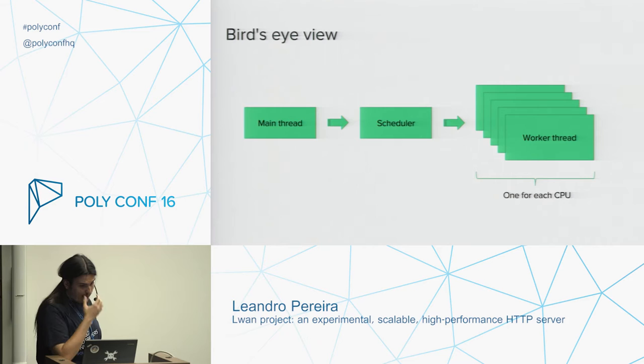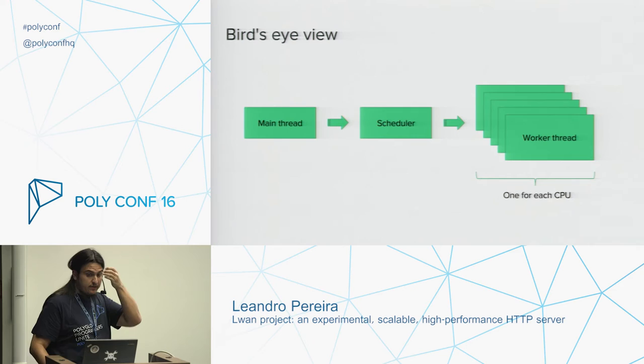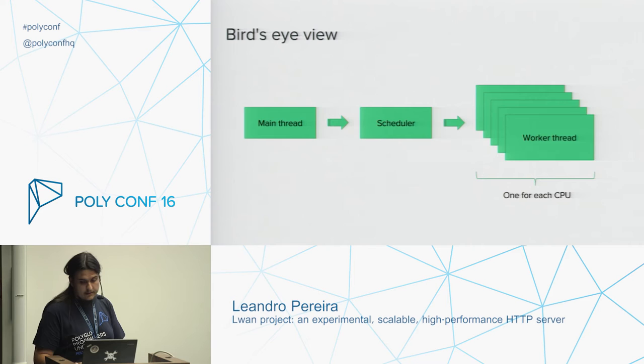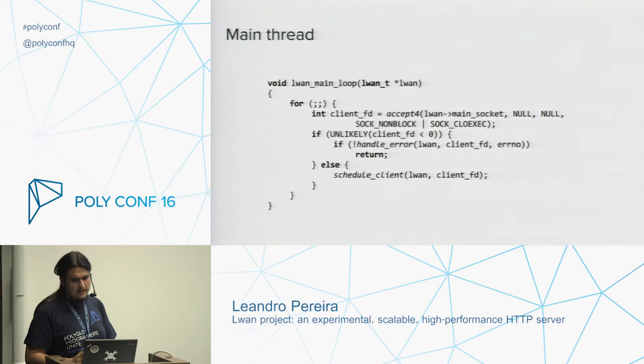I wasn't really kidding when I showed the previous slide with some code — that's pretty much how L1 started. It doesn't take too much to know that it won't work that well. So early on, I made a decision to change it so that one thread accepts connections and one thread per CPU will juggle the clients. Here's the main thread — the one that accepts clients. Some error handlers have been omitted for brevity, but the idea isn't much different from that initial implementation.